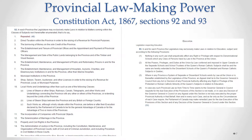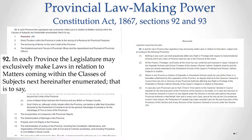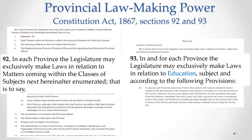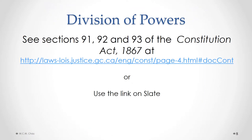The provincial lawmaking powers are set out in the Constitution Act 1867, sections 92 and 93. Section 92 contains a long list of subject matters over which the provinces have jurisdiction. Section 93 specifically gives the provinces the power to make laws concerning education. Please access the Constitution Act 1867 using the provided link — you will need to refer to it in order to do the quick quiz on the next slide.